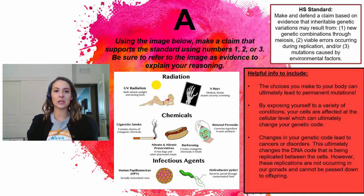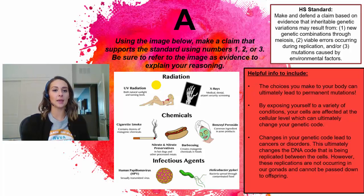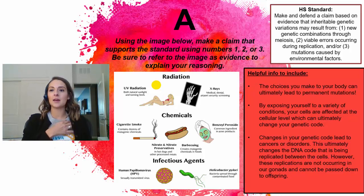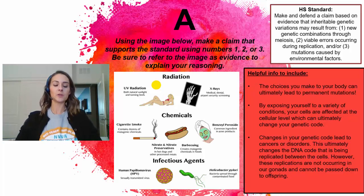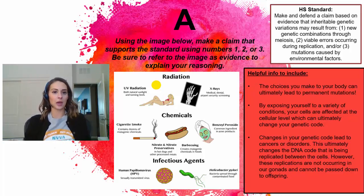Hello, everybody. We're going to be starting our Unit 5 writing assignment looking at Evidence A. What we're going to do is make and defend a claim based on evidence that inheritable genetic variations may result from — and then we need to figure out which one, two, or three applies to this picture that we're looking at.